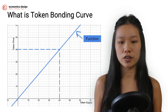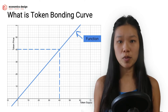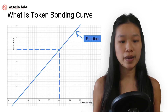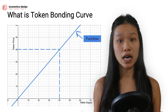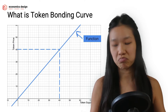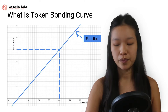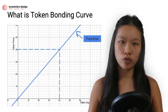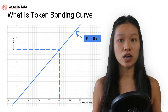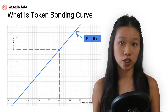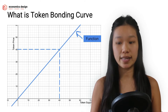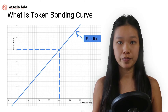So what is token bonding curves? Token bonding curves is very simple. It's basically a line, a math, a curve — it could be straight, it could be curvy. We call them a function: a mathematical function that is on a graph.